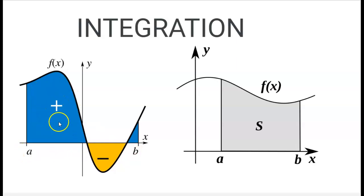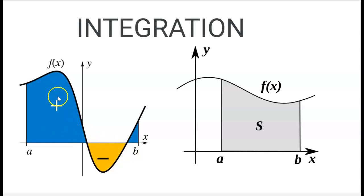Remember, from point A to B, when we find the area under the curve, the area above the x-axis is positive and the area below the x-axis is negative. If the curve has both negative and positive areas and you try to find the total area from A to B, you will get an incorrect answer. You need to split it into separate regions — blue, yellow, blue — and then add them together.